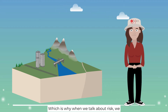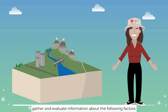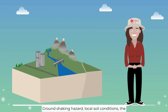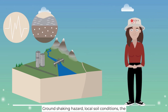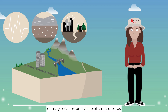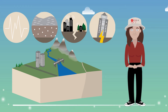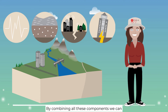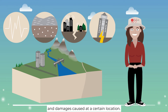When we talk about risk, we gather and evaluate information about the following factors: ground shaking hazard, local soil conditions, the density, location and value of structures, as well as the vulnerability of those structures. By combining all these components, we can determine the likelihood of people being harmed and damages caused at a certain location.